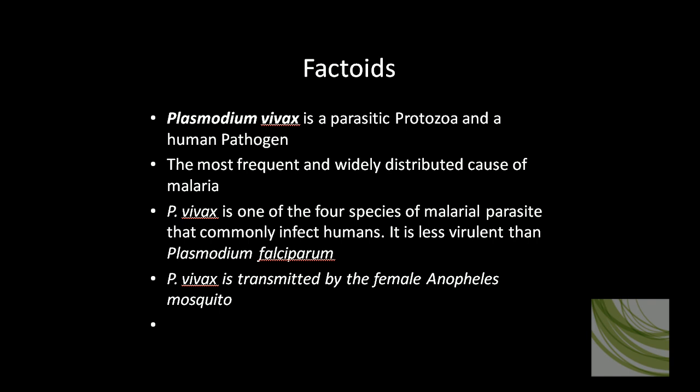The vivax parasite is transmitted by female Anopheles mosquitoes. Why females? Well, females are the only ones that bite and suck blood. They need the blood to help them lay their eggs. The males breed the females but don't feed on blood.